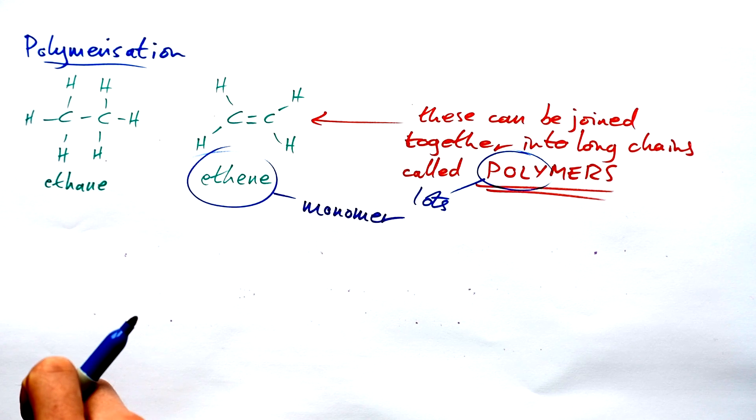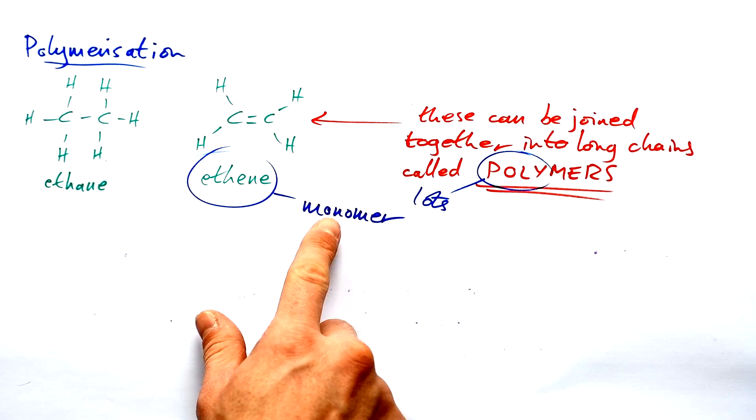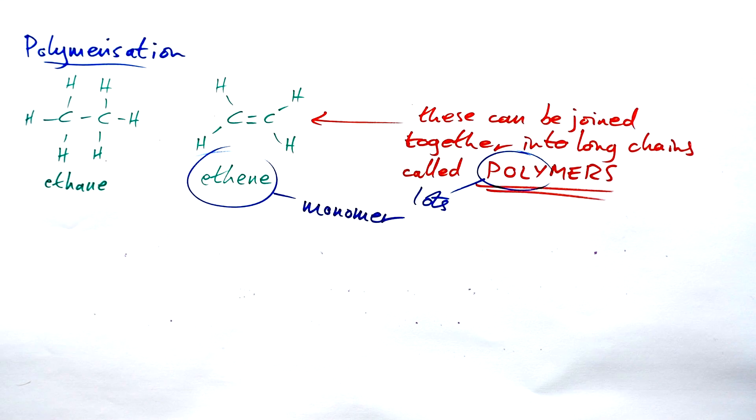What does mono mean? It means one. So lots of monomers—might be ethene, might be something else—lots of monomers get joined together to make a polymer.